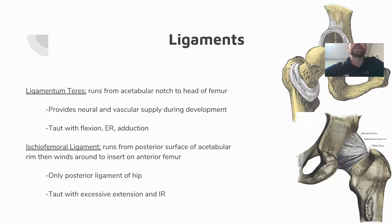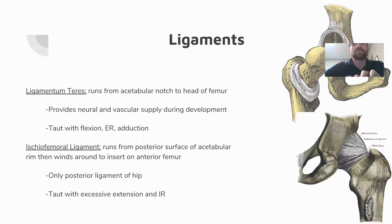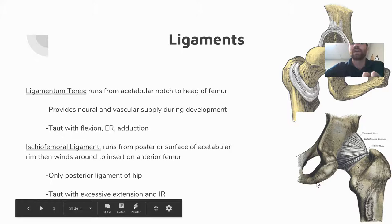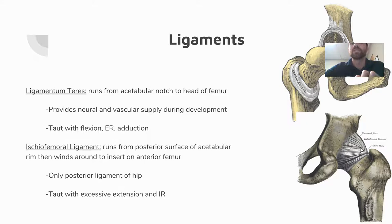The ligamentum teres runs from the acetabular notch to the head of the femur. It provides some neural and vascular supply, but research suggests this is more of a developmental contribution and not significant for normal femoral blood supply. The ligament is taut with flexion, external rotation, and adduction. The ischiofemoral ligament runs from the posterior surface of the acetabular rim, winding around to insert on the anterior femur — it is the only posterior ligament of the hip.